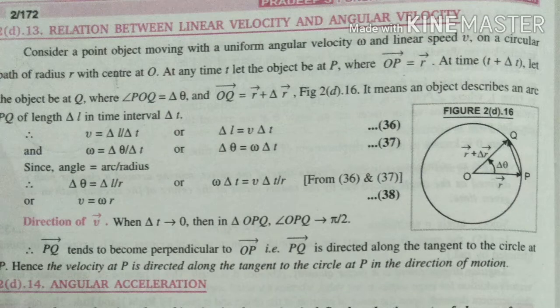It means the object describes an arc PQ of length delta L in time delta T. What is v? Delta L by delta T, or delta L equals v delta T. You can tell the distance, which is delta L.